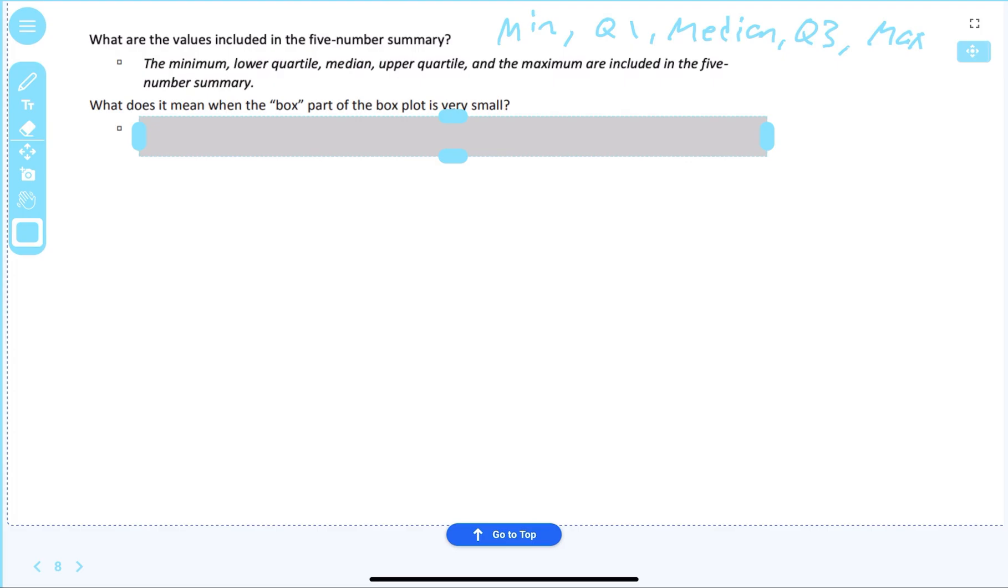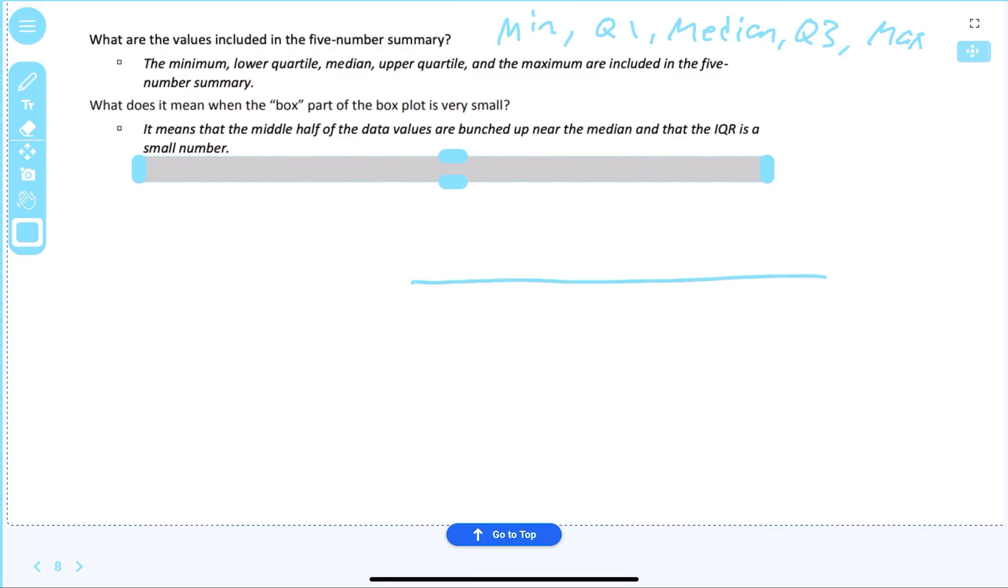What values are included in the five numbers? You've got to know these. Minimum, Q1, median, Q3, and the max. And this should be in that order from least to greatest. What does it mean when the box part of the box plot is very small? It means that the middle half of the data values are bunched up near the median and that the IQR is a small number. What if we have this and we've got this little bitty box plot right here? Let's just say this is like zero and this is like 300. That means we've got a really small - if the median is right here. Then we have a really grouped together, the middle 50%. If you're saying it's really close to the median, it's surrounding that median really close. All right, that is it.